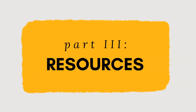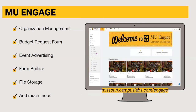The third part of this training will talk about the resources available to recognized student organizations. MU Engage is a student organization management platform. All recognized student organizations have access to an organization portal, where you have the ability to complete the ORG funding process, advertise your organization's events, create forms, store internal files, and more.